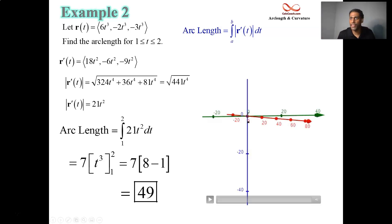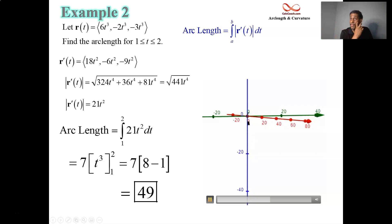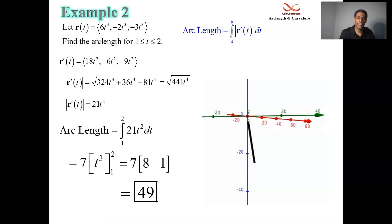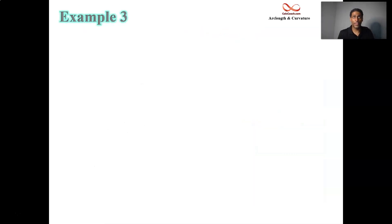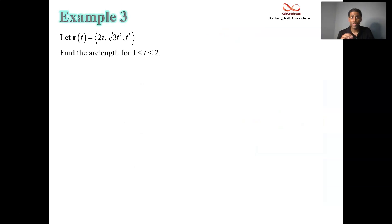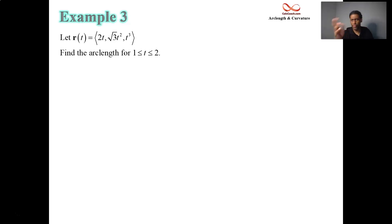Here's a visual for that one — it's a straight line path. Let's do one more example. The components are 2t, root 3 times t squared, and t cubed, over the same time interval from 1 to 2.